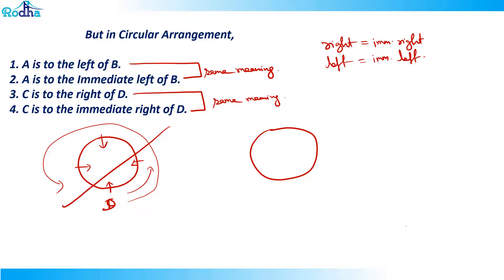In circular arrangement, left equals immediate left as well. So if A is to the left of B, and I mark B here, then A to the left of B is the same as A to the immediate left of B — both mean the same thing in circular arrangement. That's the basic point distinguishing linear and circular arrangements. Keeping these points in mind, we will solve different sets on linear and circular arrangements and learn how to approach a puzzle.